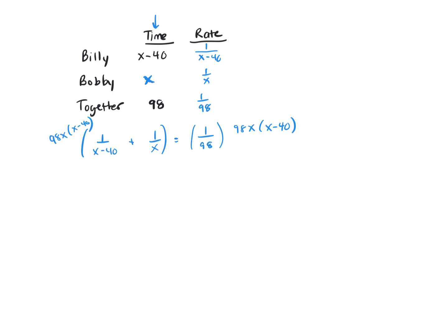So when you multiply through with that LCD, multiply it times 1 over X minus 40, that leaves you 98X plus. Here the X's cancel, and you're left with 98 times X minus 40. Here the 98 cancels, and you're left with X times X minus 40.